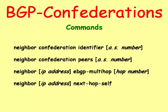The neighbor next-hop self command changes the next-hop address in route advertisements learned from the EBGP neighbor to itself.